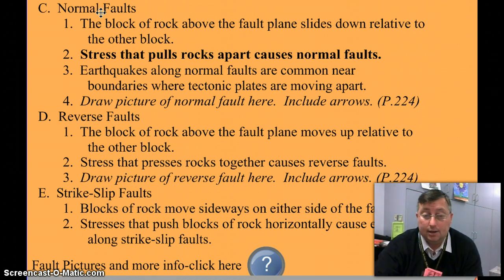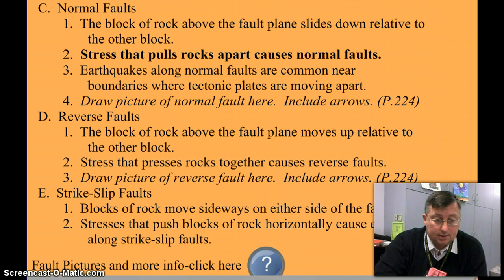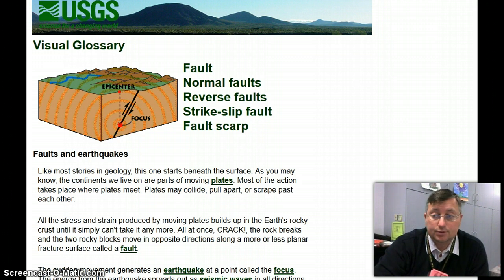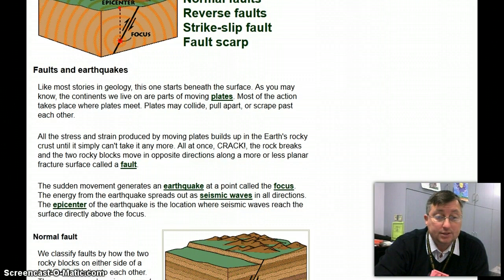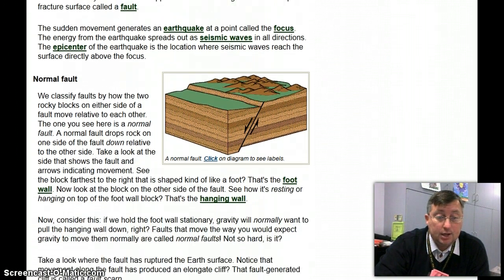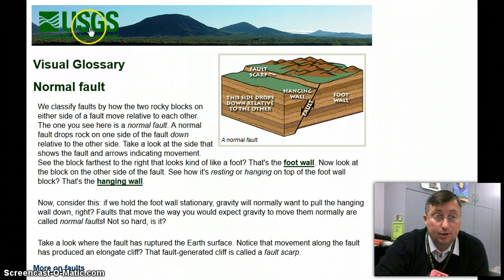In your book on page 224, there are really good pictures of it. If you get online and check that out, that'd be a really good idea. I think there's a page on this link right here — here's that link at the bottom. It starts showing a normal fault, a reverse fault, and a strike-slip fault. There's also other information here, and if you get a chance to read this, it's a lot of good information about each type of fault.